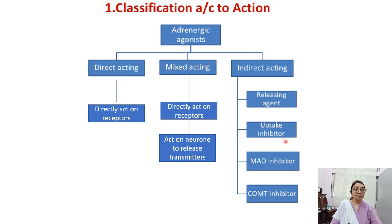The second type of indirectly acting drug is the uptake inhibitor, which inhibits the re-uptake of neuronal as well as extraneuronal neurotransmitter, thereby increasing the concentration of the neurotransmitter at the site of action. Third is the MAO inhibitor — the monoamine oxidase inhibitor — which degrades the neurotransmitter, so its inhibitor causes increased concentration of neurotransmitter at the site of action.